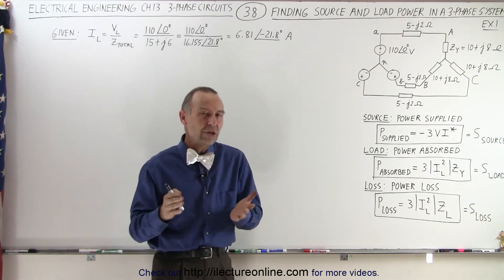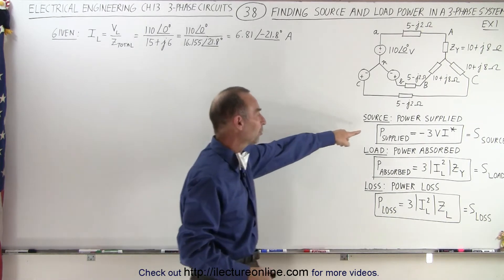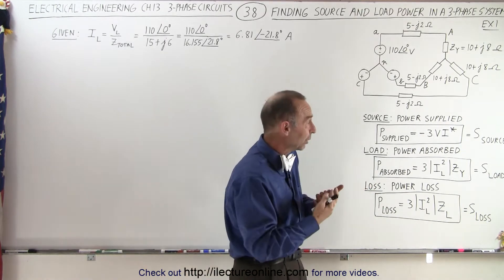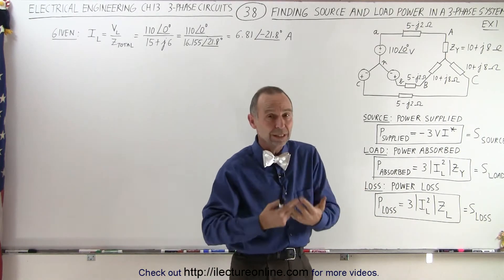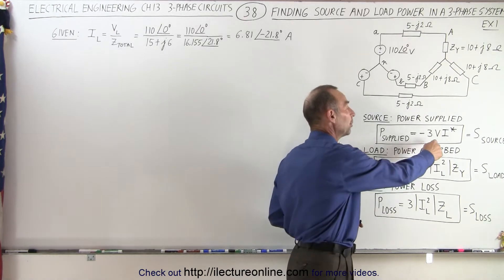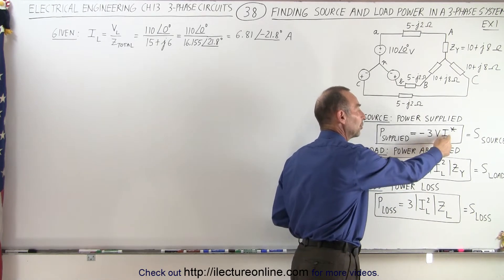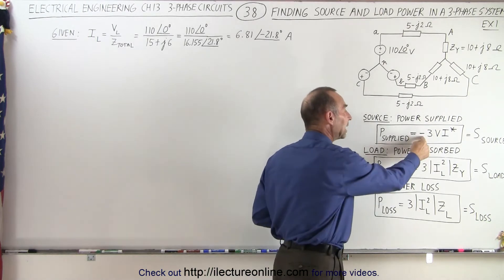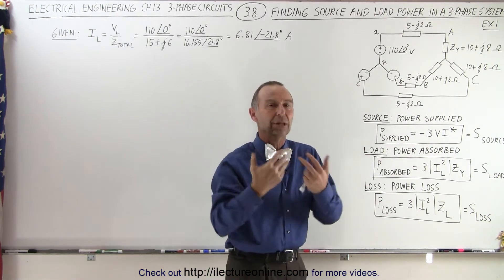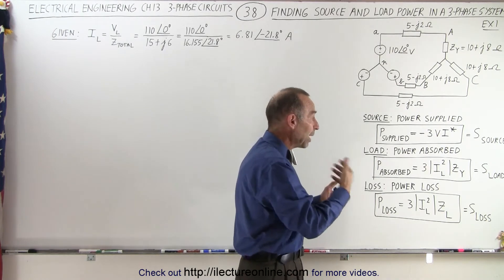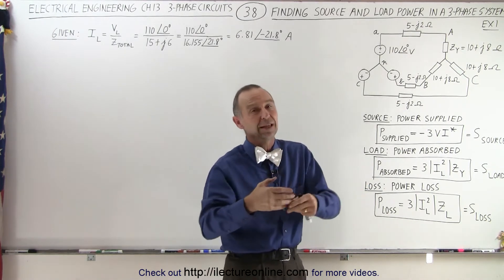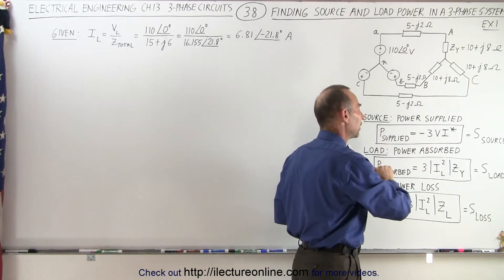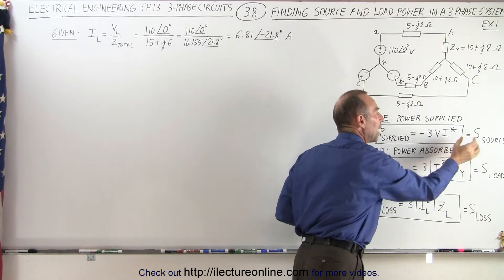We have three equations in order to do that. The first equation is the power supplied, which is typically the voltage times the current. Since we're dealing with impedance that has both real and imaginary parts, we want to multiply the phasors — the voltage times the current — and we have to use the complex conjugate for the current. The negative in front means power supplied, because when we're dealing with power absorbed, that's a positive quantity, so therefore power supplied is a negative quantity. That's basically the complex power at the source.